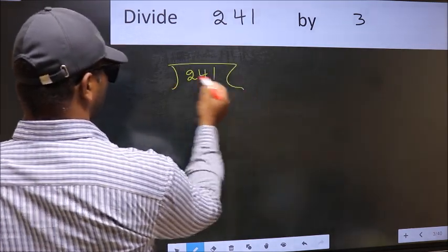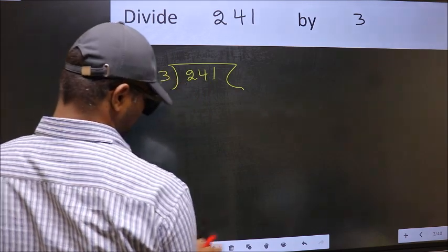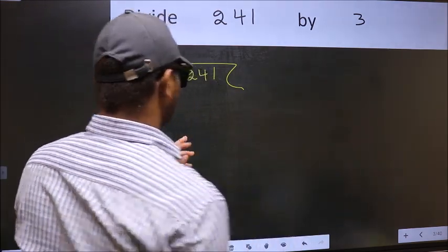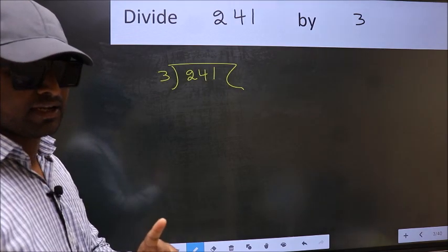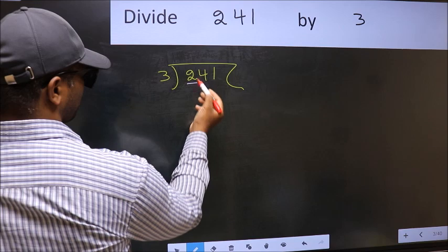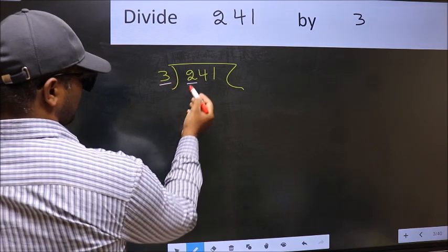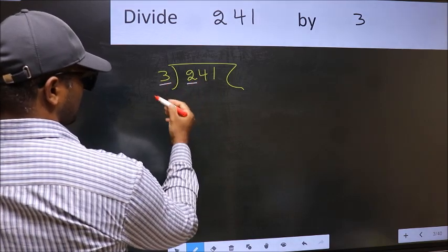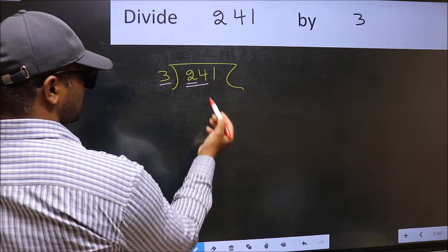241 and 3 here. This is your step 1. Next, here we have 2 and here 3. 2 is smaller than 3. So, we should take 2 numbers, 24.